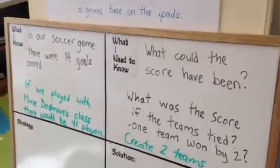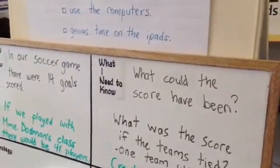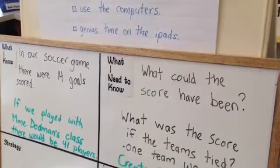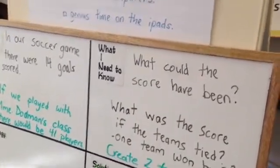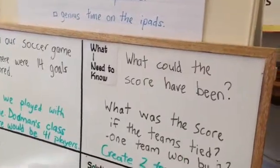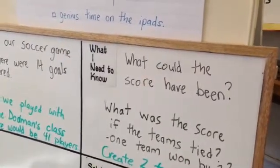Our first question is, in the soccer game we just played, there were 14 goals scored. So what I want you guys to figure out is, what could the scores have been? What were some of the possible scores of our soccer game?